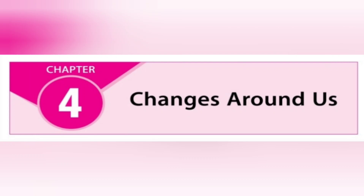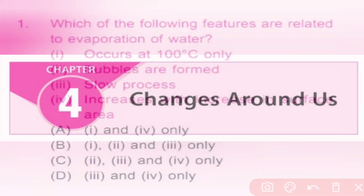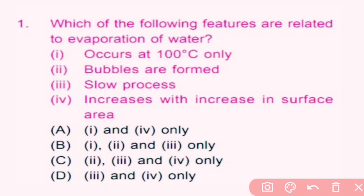Let's start with question number one: which of the following features are related to evaporation of water? Option one: occurs at 100 degree Celsius only. Option two: bubbles are formed. Option three: slow process. Option four: increases with increase in surface area.